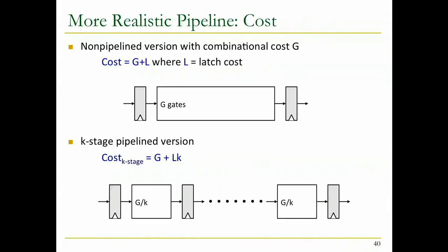There's also a cost aspect. In the non-pipelined version the cost is the number of gates plus latch cost. In a k-stage perfectly pipelined version you divide the G gates per stage to G/k - but that's perfect and very hard to achieve - and your latch overhead jumps up. If you have k stages you pay the latch overhead for every stage, and if you have big latches - which we'll see why they become big, because we need to propagate control signals - this becomes relatively high. So we're adding hardware cost, at least for the latching overhead.